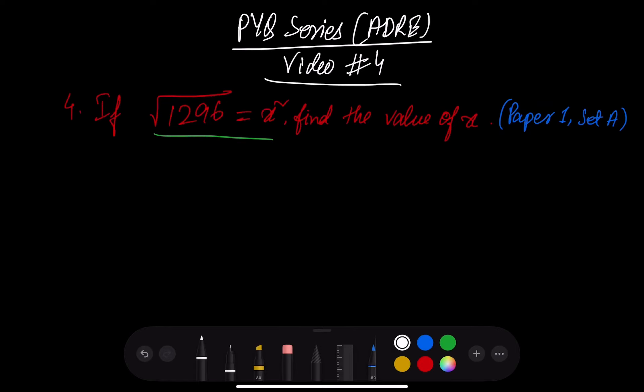So we have question number 4 in the PYQ series, 4th video. We have paper 1 set A of grade 4. Here we have x squared equal to 1296. We have seen this 1296 number in square root.